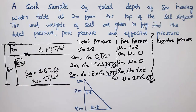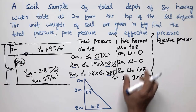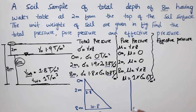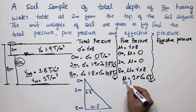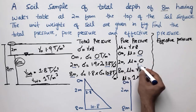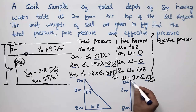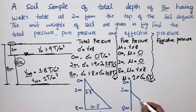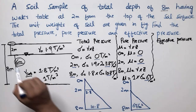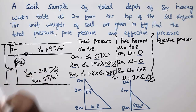Drawing the pore water pressure distribution profile: at 0 meters we have 0, at 2 meters we have 0, and at 8 meters we have 6 ton per square meter. The pore water pressure starts from the 2-meter depth where the water table begins and increases linearly to 6 ton per square meter at the bottom.